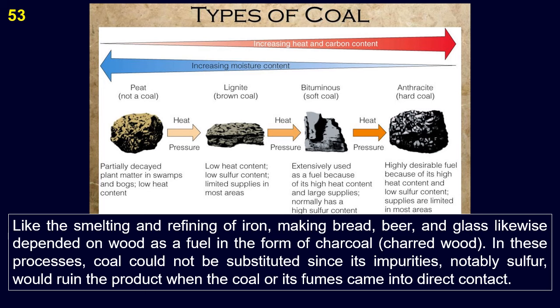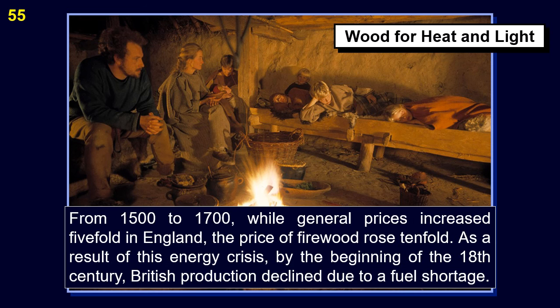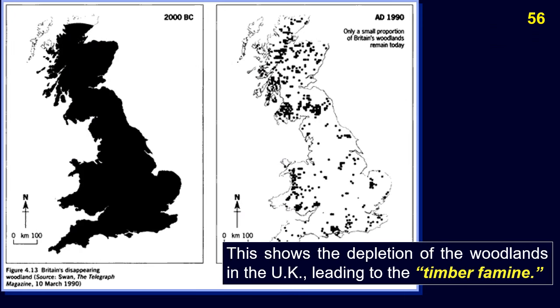Coal could not be substituted since its impurities, notably sulfur, would ruin the product when the fuel or its fumes came into direct contact with it. Also, in the heating and lighting of buildings, wood was preferred as a fuel since coal fires produced noxious fumes. As the scarcity of timber spread, its price inevitably rose. From 1500 to 1700, while general prices increased five-fold in England, the price of firewood rose tenfold. As a result of this energy crisis, by the beginning of the 18th century, British production declined due to a fuel shortage. This shows the depletion of the woodlands in the UK, leading to the timber famine.